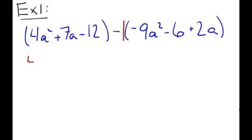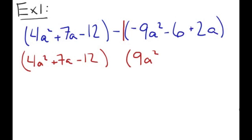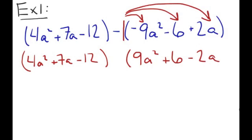So let's go ahead and we're going to write this one out again: 4a squared plus 7a minus 12. And we're going to multiply through by this negative 1. So negative 1 times negative 9 is positive 9a squared. Negative 1 times negative 6 is positive 6. And negative 1 times positive 2a is negative 2a.